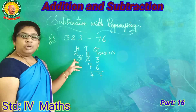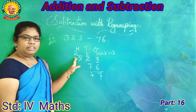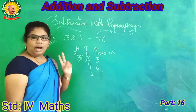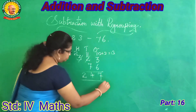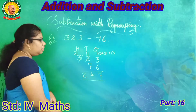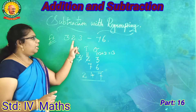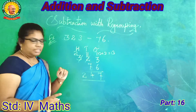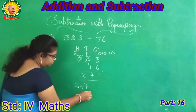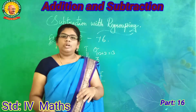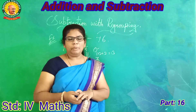Next, look at the hundreds. How many hundreds here? Two hundreds. Two hundreds only. So the difference between 323 minus 76 is 247.